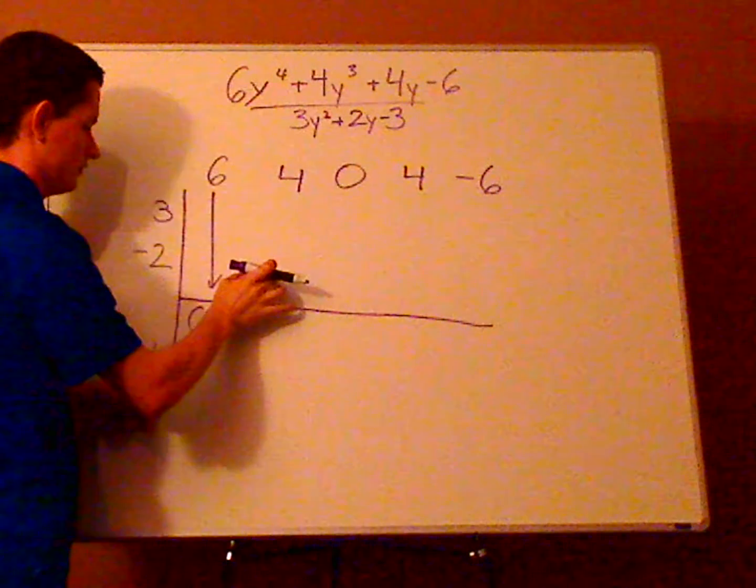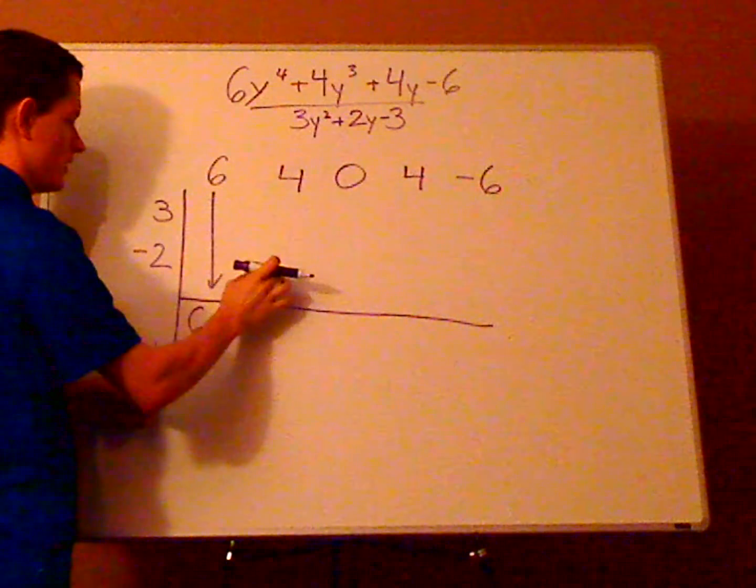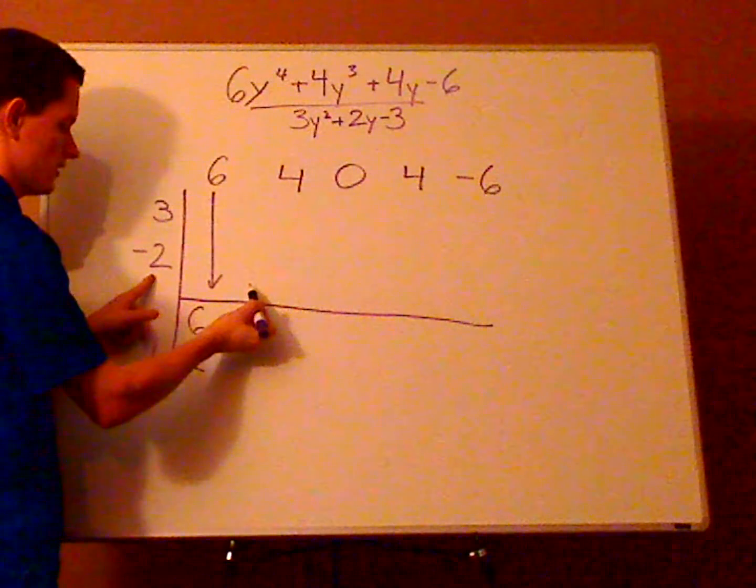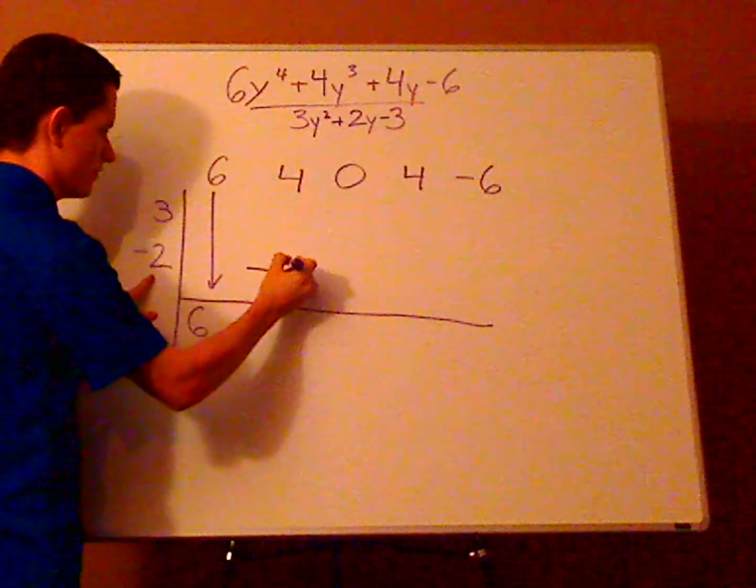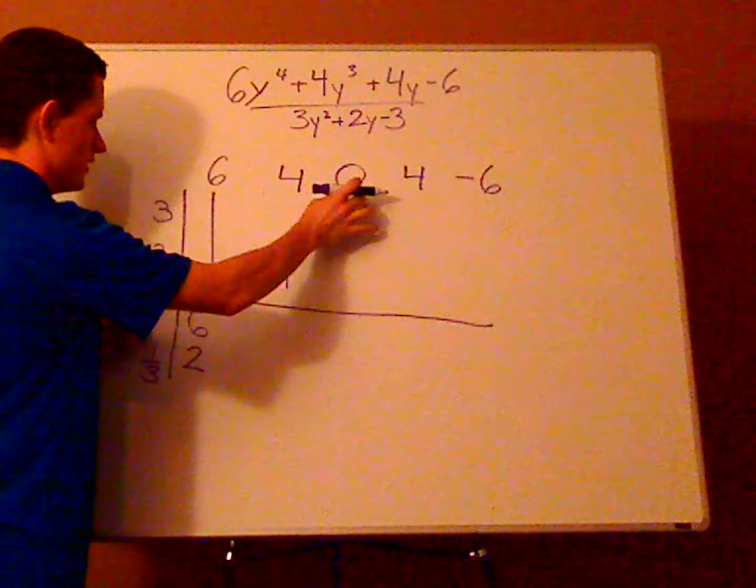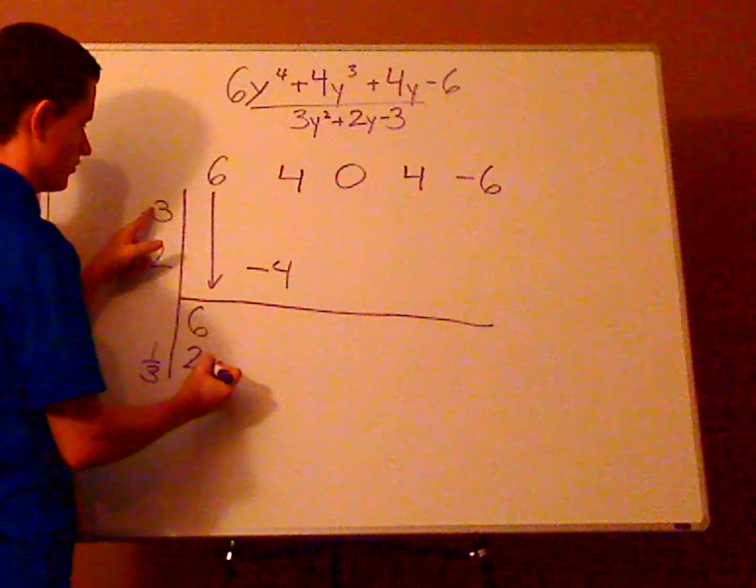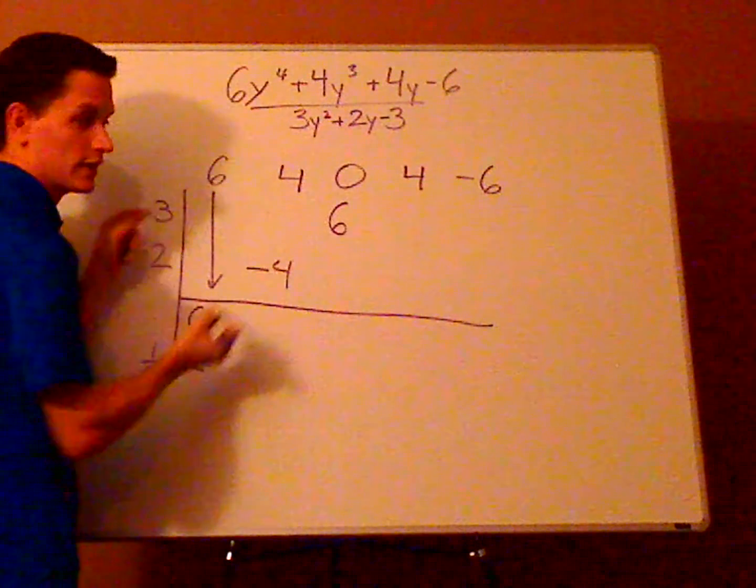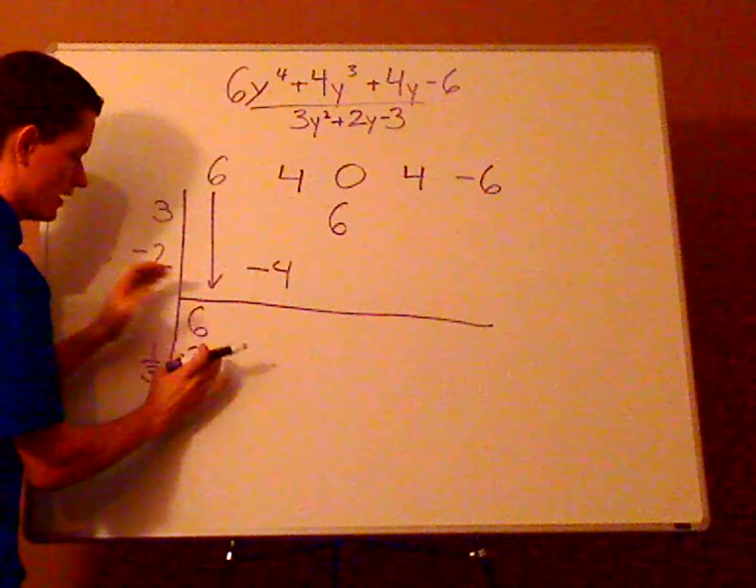Now here you're going to do a diagonal. So in this column it's this 2 times negative 2 which gives you negative 4, and then this column put 3 times 2 which is 6. See that if this 2 was here it would be directly diagonal.